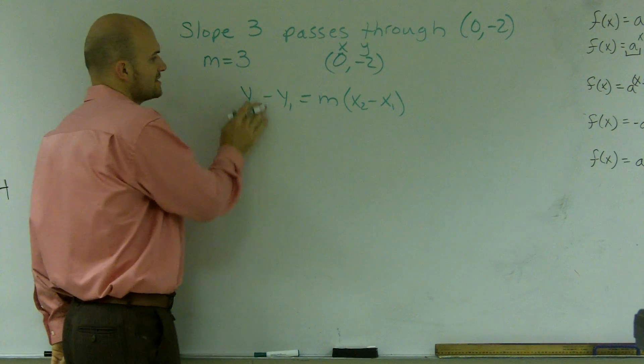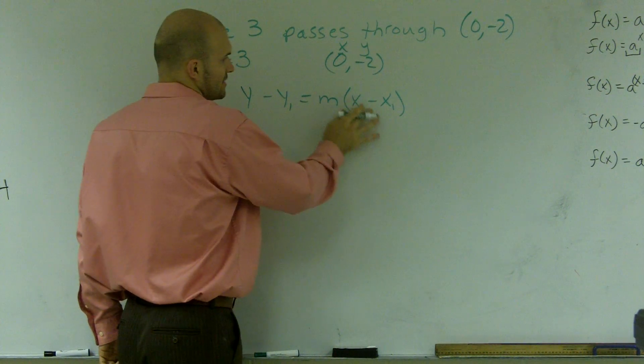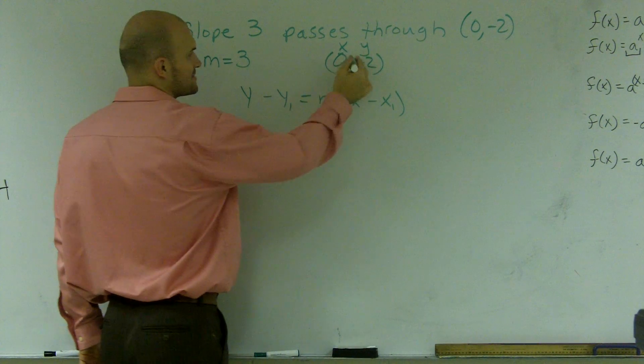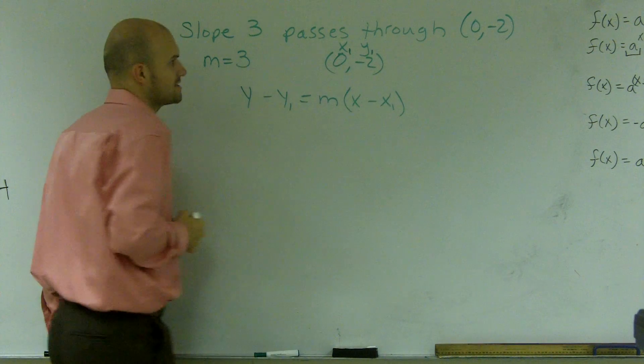Now, we don't have two points. So what I'm going to do is I'm just going to get rid of my x2 and x1, or x2 and y2, I'm sorry. I'm going to label these x1 and y1.